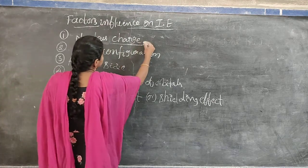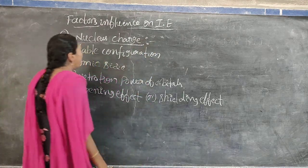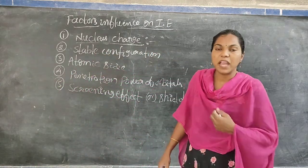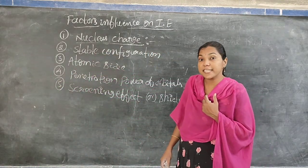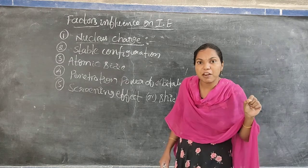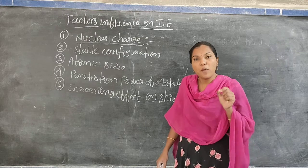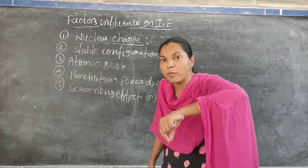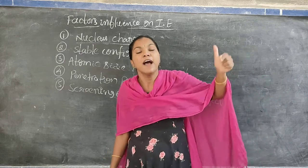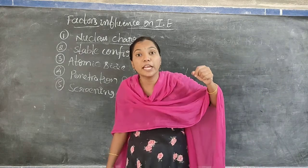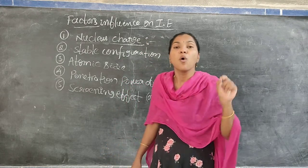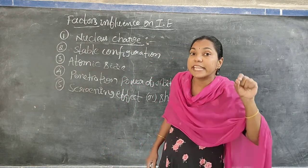The first factor is nuclear charge. When the nuclear charge increases, what happens? It increases the attraction power upon the valence electrons. So when the nuclear charge increases, the attraction power upon the valence electrons also increases.